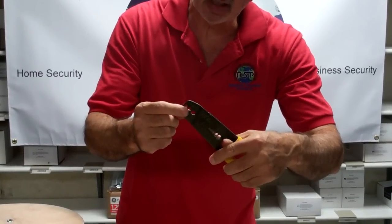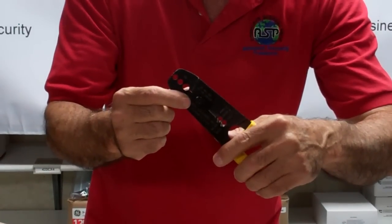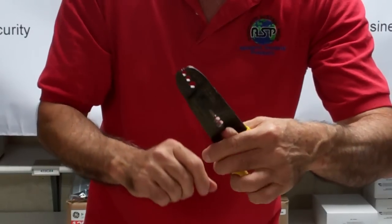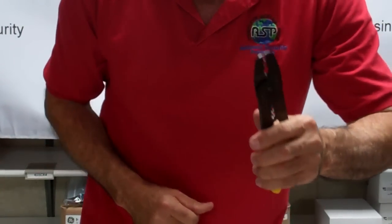Up here I may as well mention now these are more for crimp on connections for your RG6 and RG59 if you're going to use a crimp on style connector.